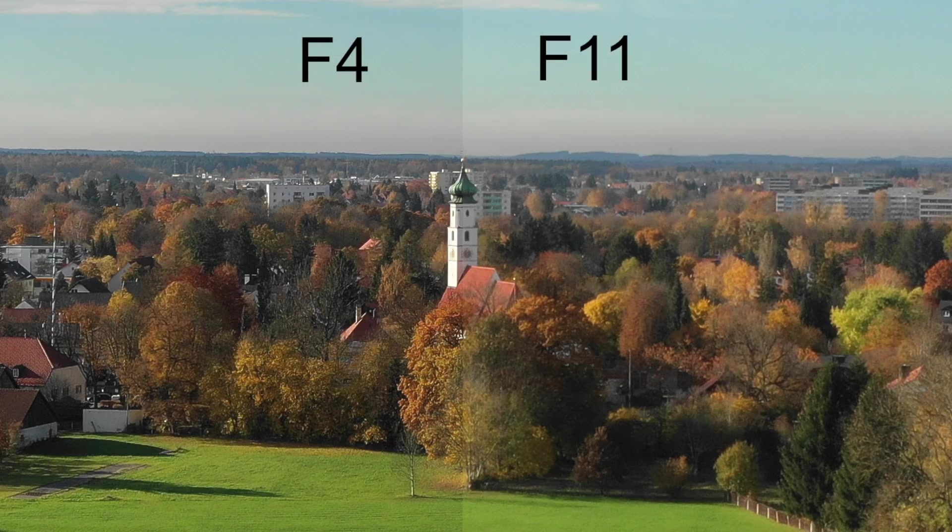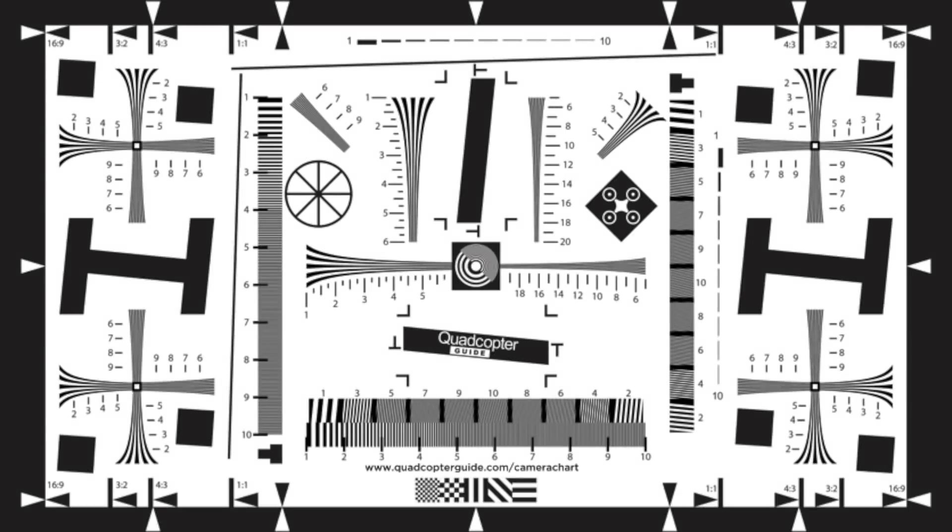If you stop the aperture down to f/11, it starts to get less clear and sharp, so you want to try to avoid that. In a bit, I'll show you and give you the tools so you can test your own Mavic 2 Pro and see which f-stop is the sharpest on your drone. For videography it's also important because there's this thing called the 180-degree shutter rule.